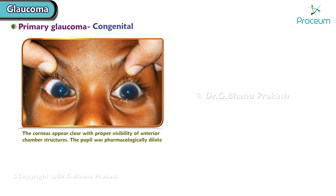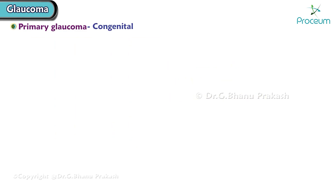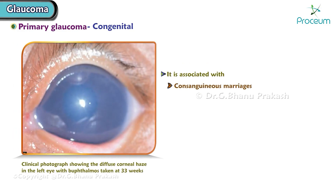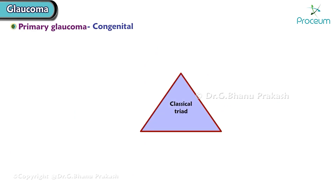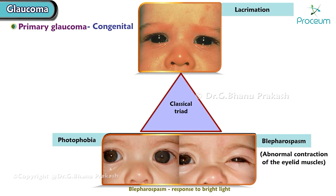Primary congenital glaucoma is the most common glaucoma of childhood. It has an autosomal recessive inheritance pattern and occurs from birth till three months of life. It is associated with consanguineous marriages and children present with buphthalmos. The classical triad consists of lacrimation, photophobia, and blepharospasm.